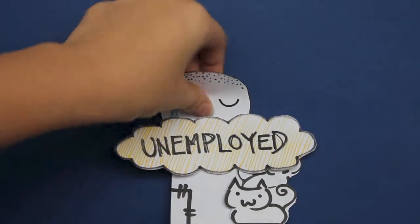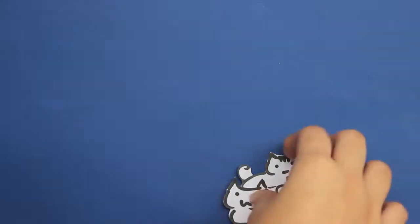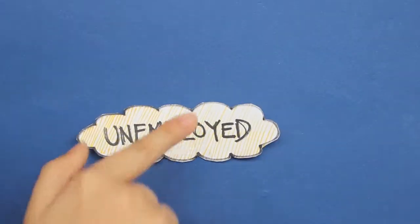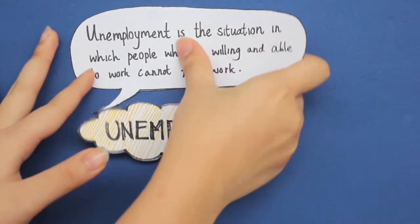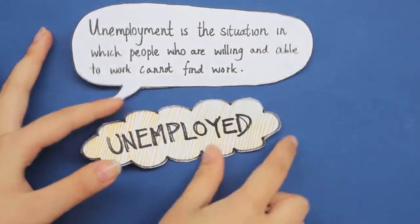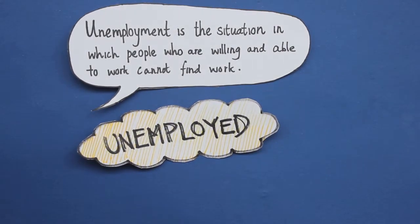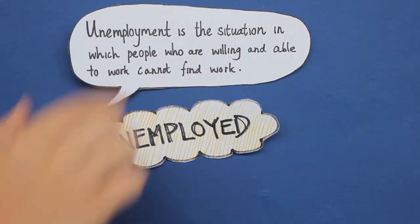But what does unemployment mean? Unemployment refers to the situation in which people who are willing and able to work cannot find work. There are three different types of unemployment: structural, cyclical, and frictional.